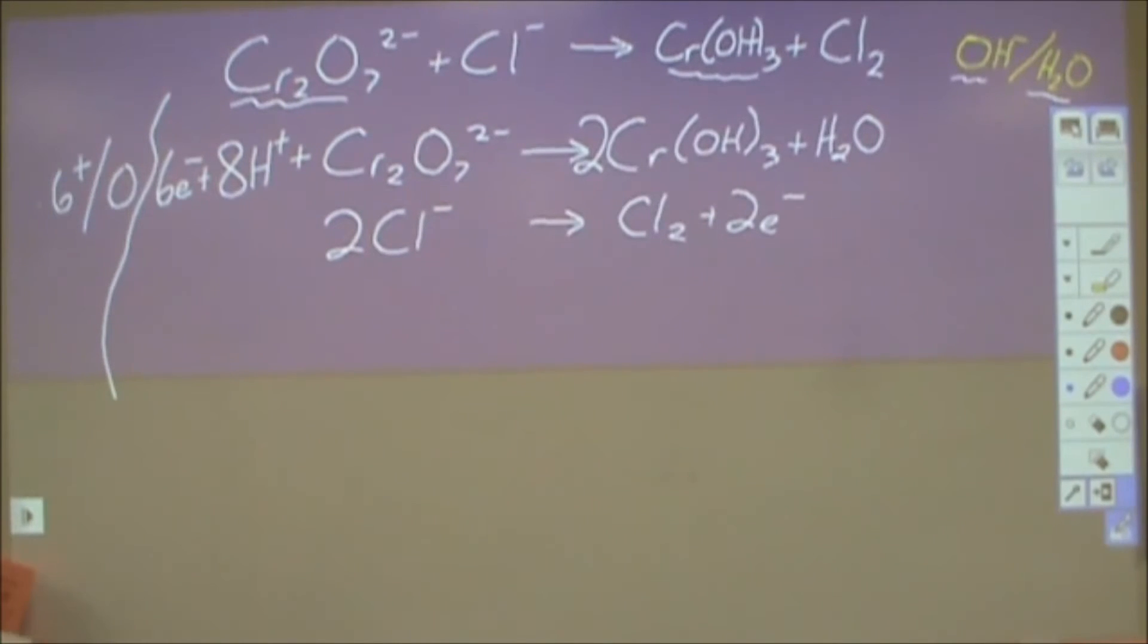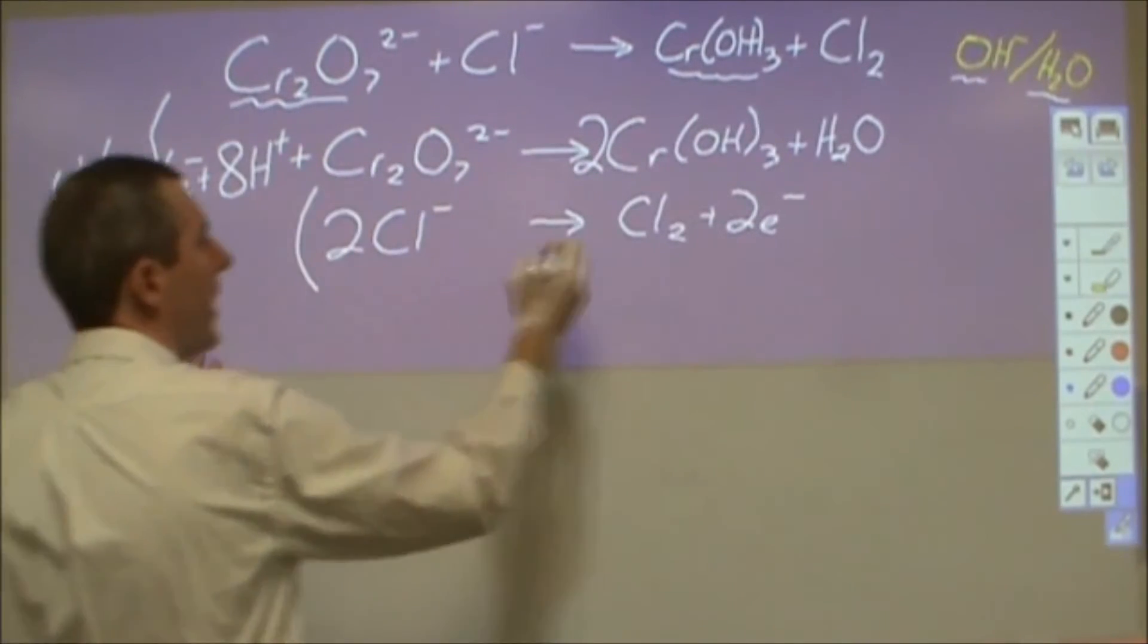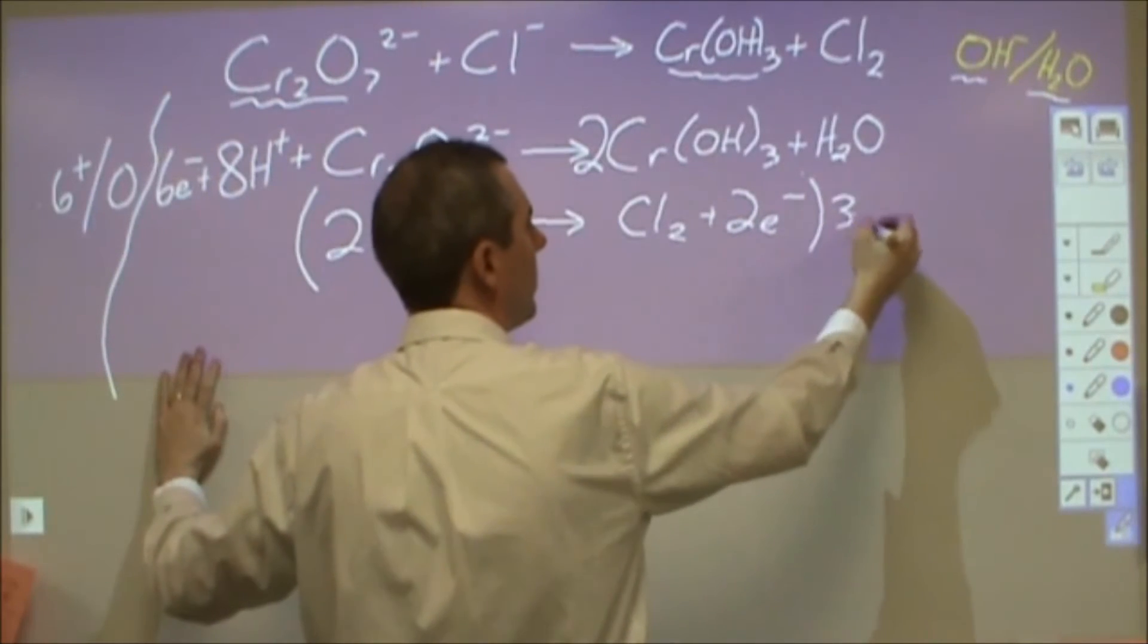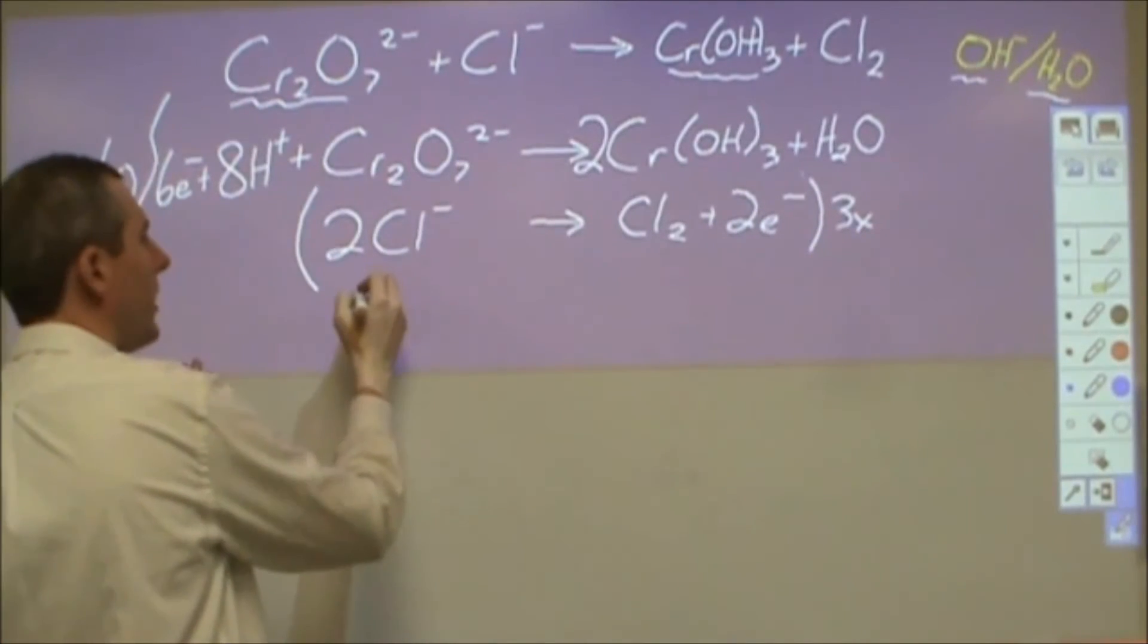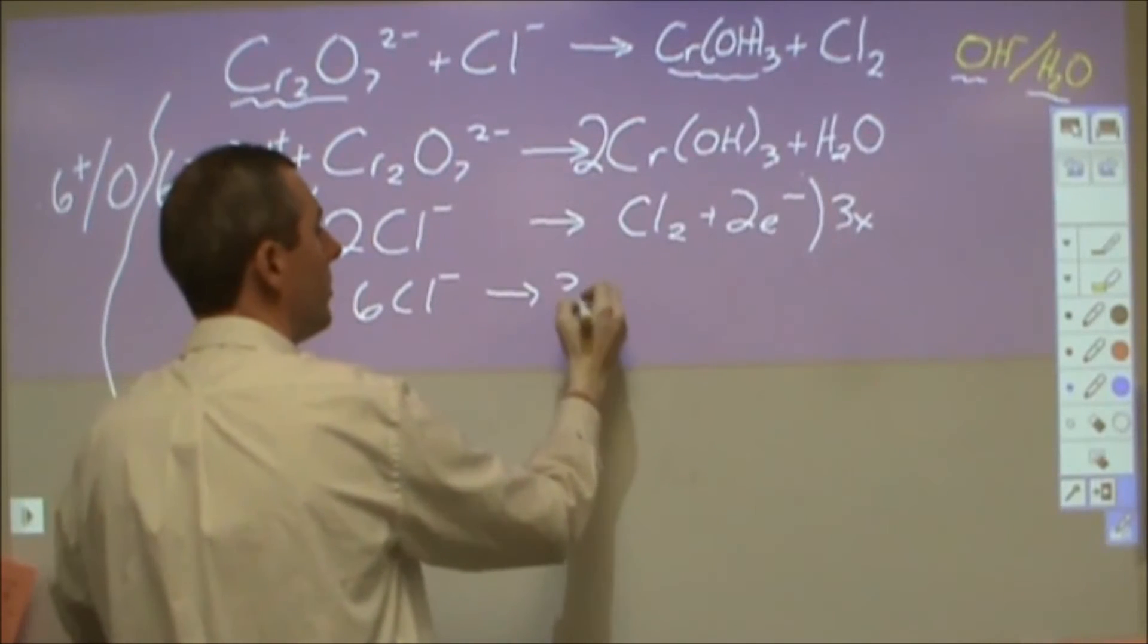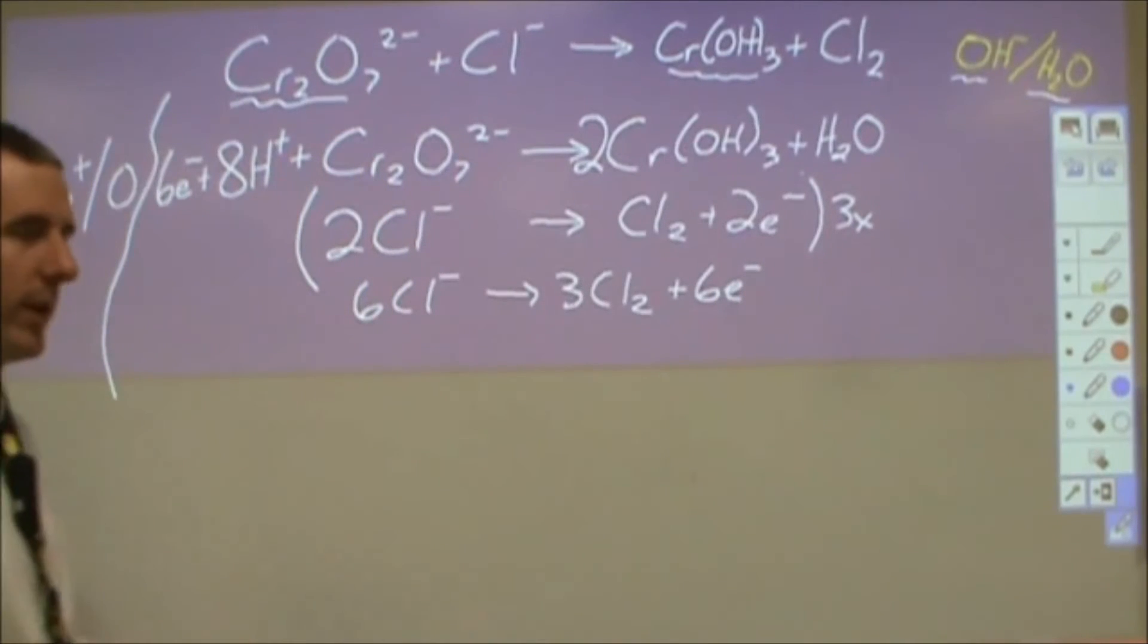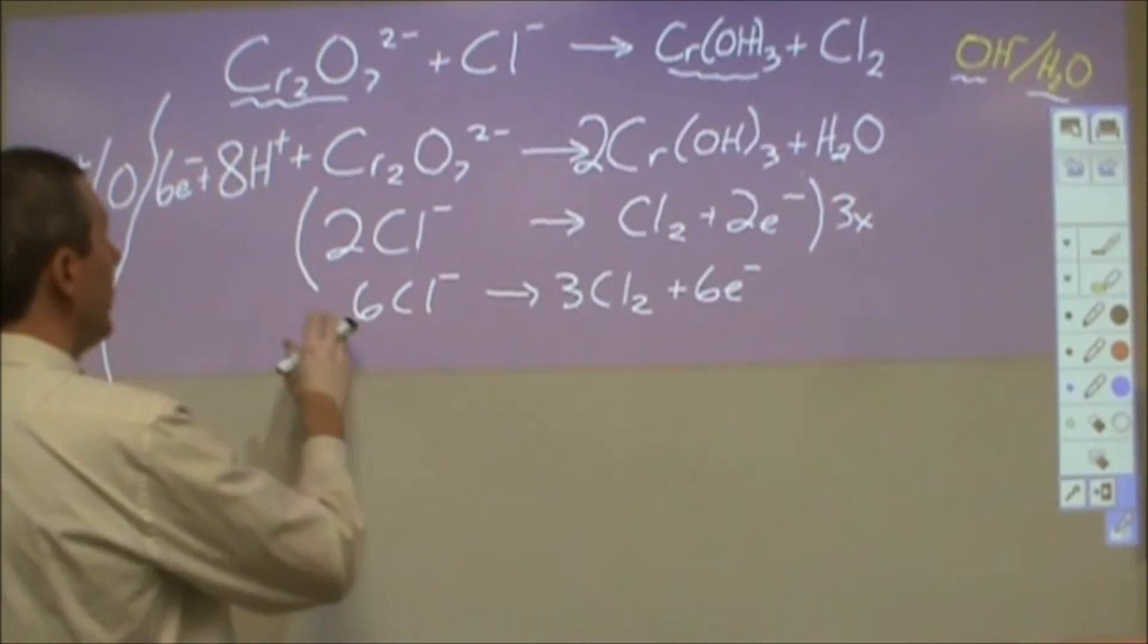Now at this point what I want to do is combine these two reactions. But in order to get the charges to balance, I need the electrons to be the same in both. So this bottom reaction is going to get tripled. So instead of two chlorides it's going to be six chlorides, instead of one chlorine molecule it's going to be three chlorine molecules and six electrons instead of two. When that happens and I add these together that will make everything else balance in terms of charge.